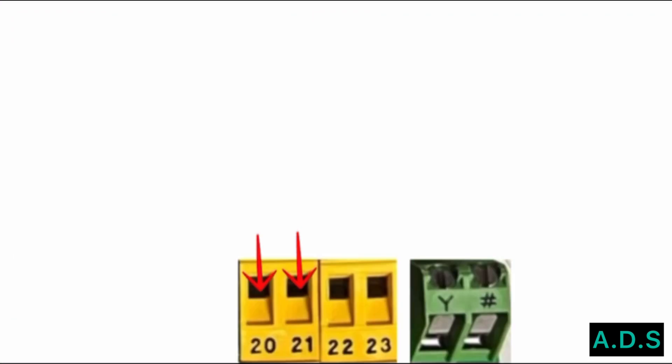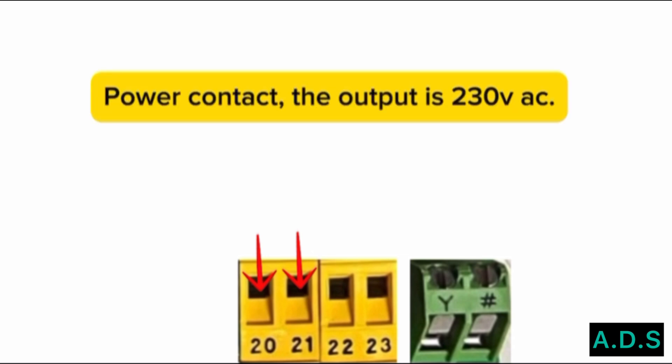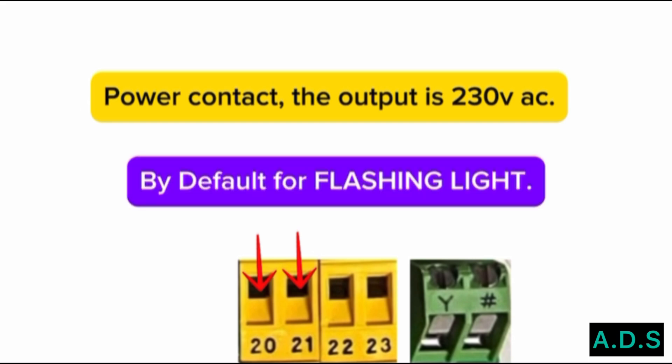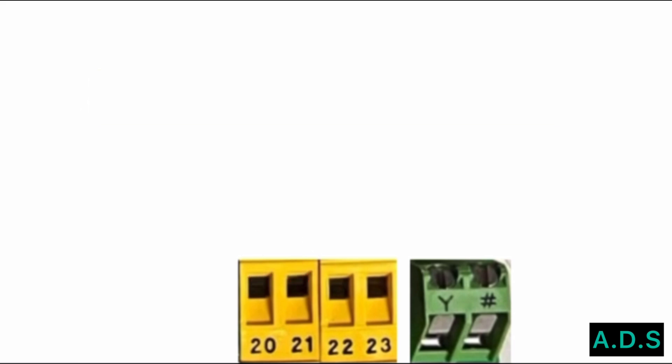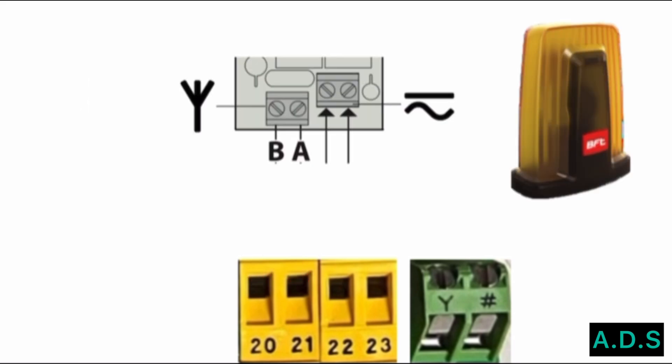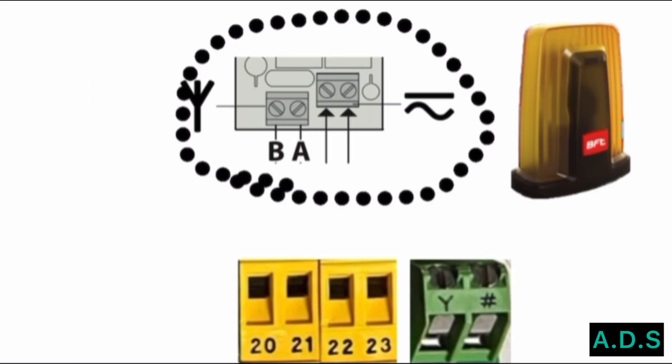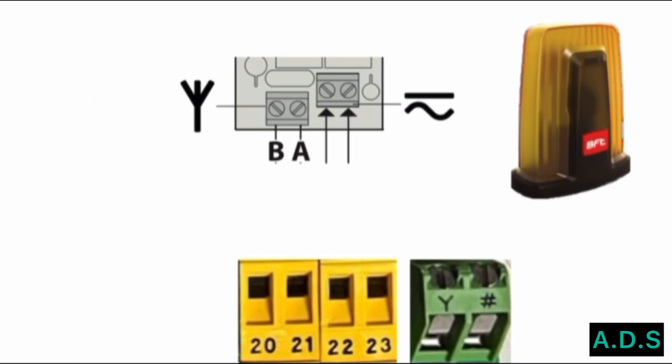Terminals 20 and 21 — power contact. The output is 230 volt AC. By default, terminals 20 and 21 are for the flashing light. This diagram shows the flashlight circuit. Connect the 230 volt AC flashlight to terminals 20 and 21.